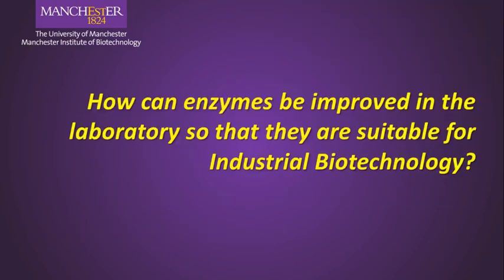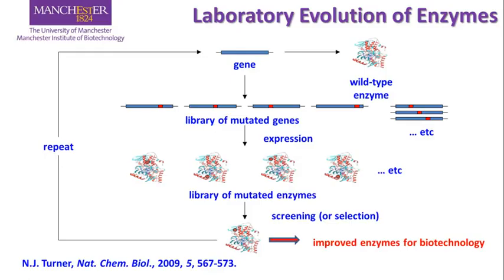So how can we link these ideas of natural selection and natural evolution to laboratory evolution to produce enzymes that are better suited for industrial biotechnology? This slide shows the process of generating laboratory evolution of enzymes by essentially taking three types of technology and assembling them into a laboratory process.